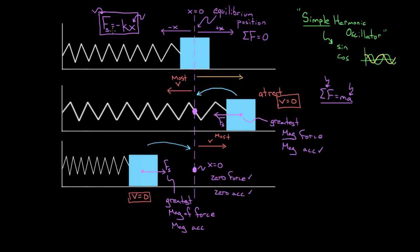To recap: objects with a restoring force that's negatively proportional to the displacement will be simple harmonic oscillators. For all simple harmonic oscillators, at the equilibrium position you get the greatest speed but zero restoring force and zero acceleration. Whereas at the point of maximum displacement, you get the maximum magnitude of restoring force and acceleration, but the least possible speed.